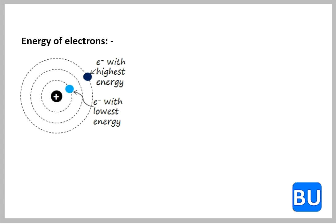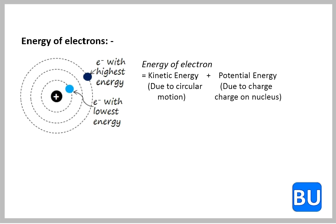Every orbit has fixed amount of energy associated with it. The electrons in last orbit have more energy than in first orbit. Hence, the energy of electron increases as the distance between electron and nucleus decreases.